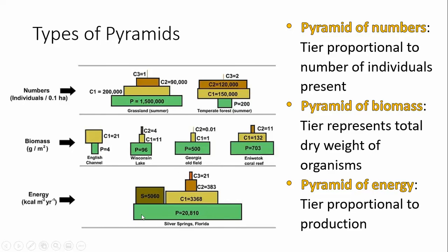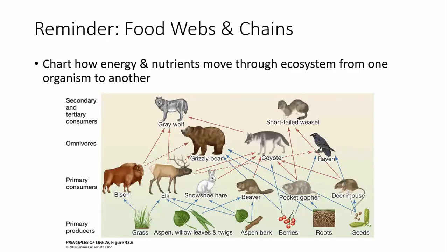Take note of what's being diagrammed in pyramids — if given a pyramid of numbers that looks top-heavy, don't assume it's impossible; those producers may just be large organisms. Food webs and food chains show how energy and matter move through an ecosystem. In reality, interactions are usually food webs because organisms typically have more than one energy source, since specializing too much isn't adaptive if the environment changes.